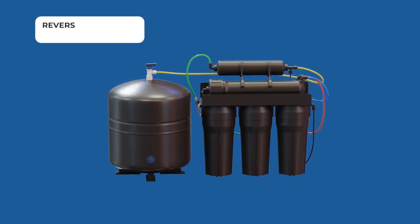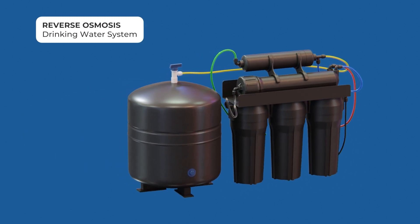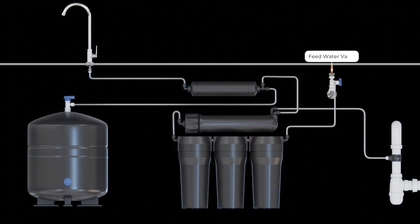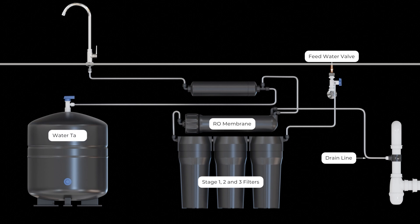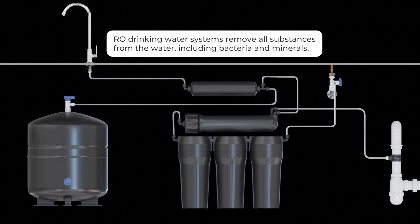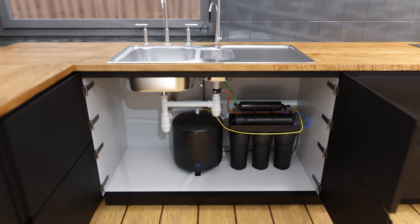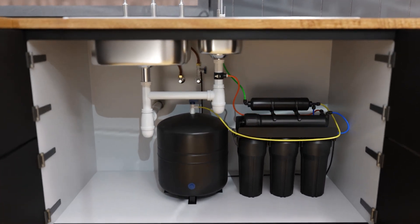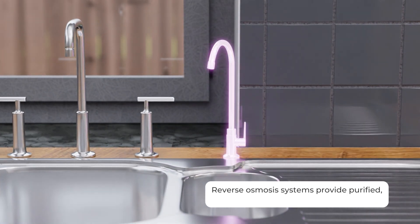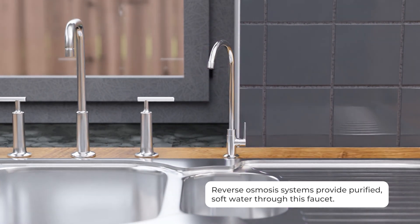Drinking water systems, also called reverse osmosis or RO systems, don't focus on removing or treating the minerals in the same way that water softeners and scale inhibitor systems do. Instead, they remove all the stuff from the water, including bacteria and minerals. Reverse osmosis systems are typically installed under the sink and come with their own faucet, providing purified, soft water through this faucet.